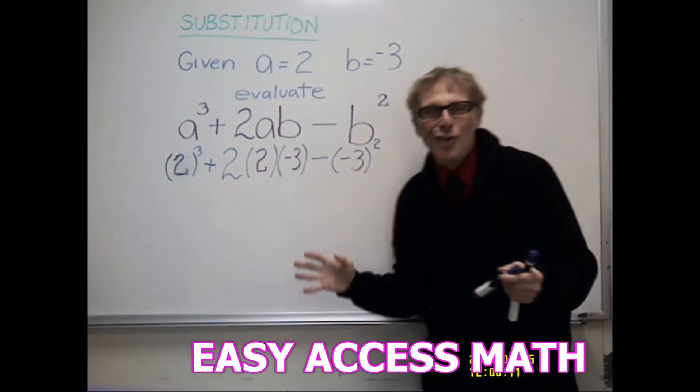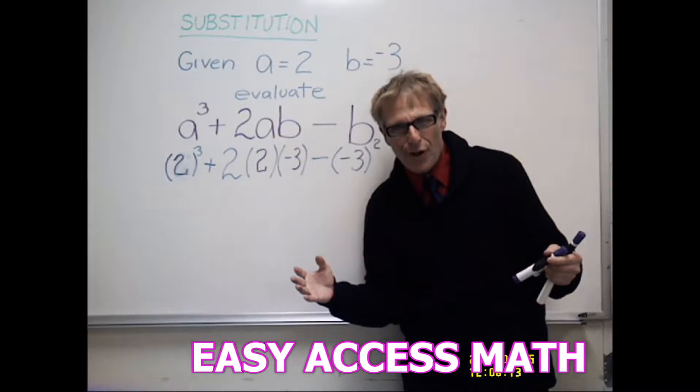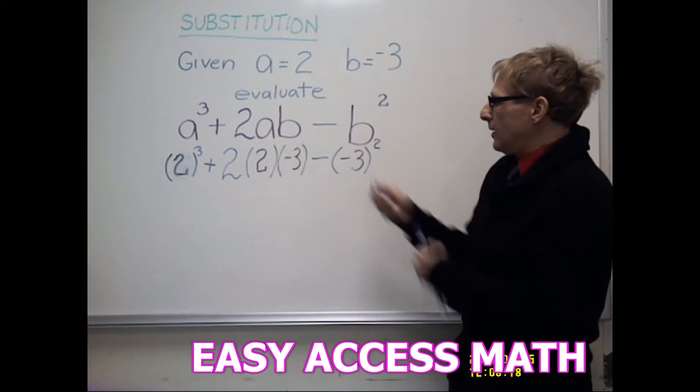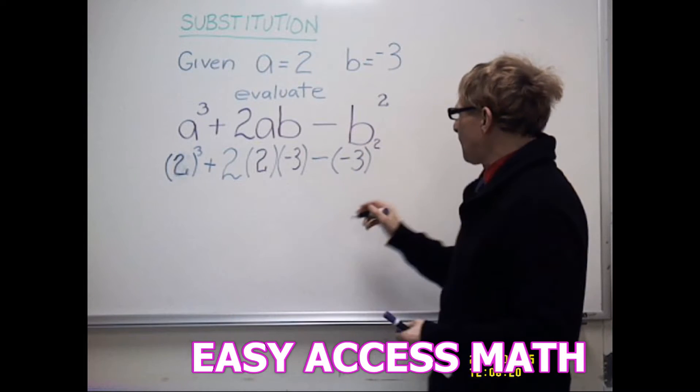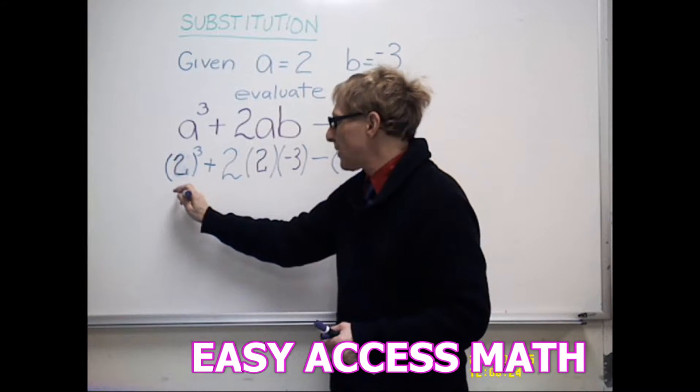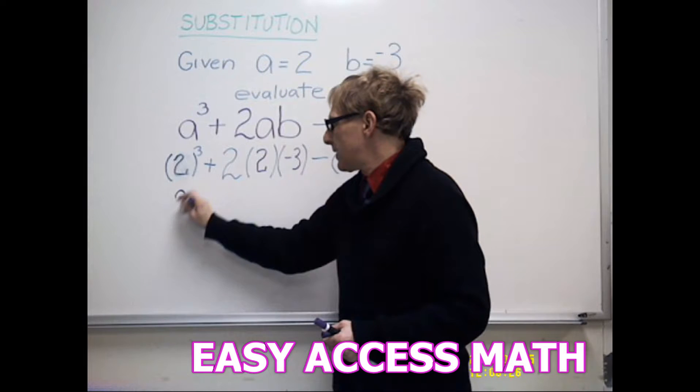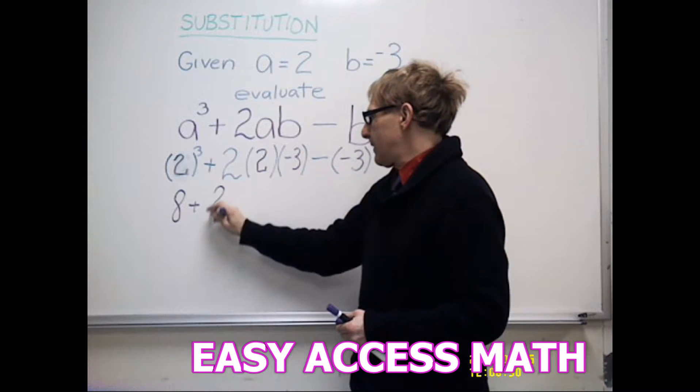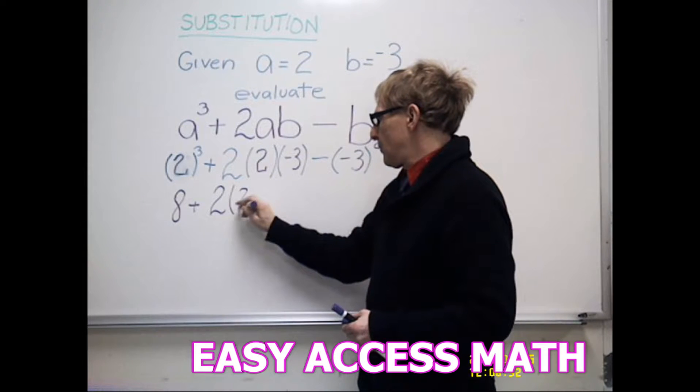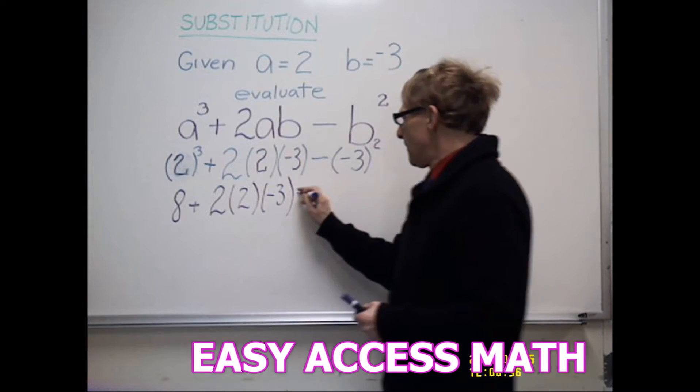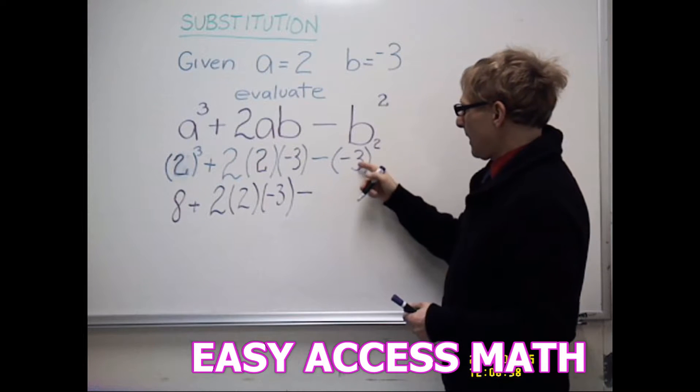Be careful with signs. There's always room for sign mistakes, so you want to be very careful. Let's do all of our exponents first. We have 2 to the third power, which is 2 times 2 times 2, which is 8, plus I'll just bring this down to 2 times 2 times negative 3, minus 3 to the second power.